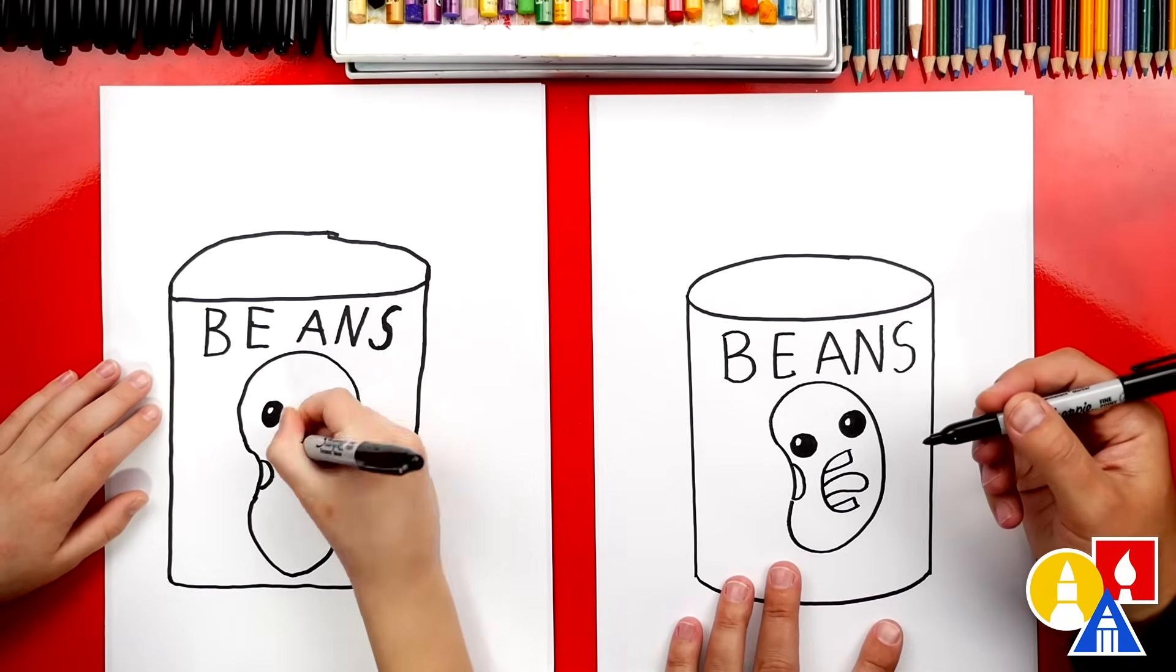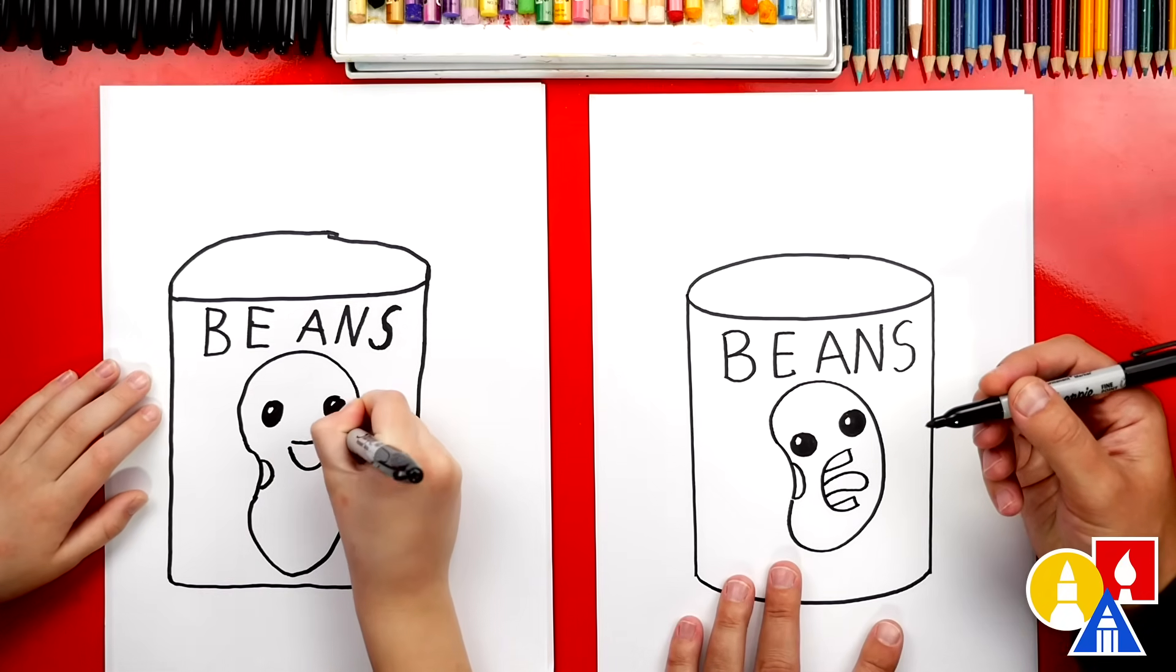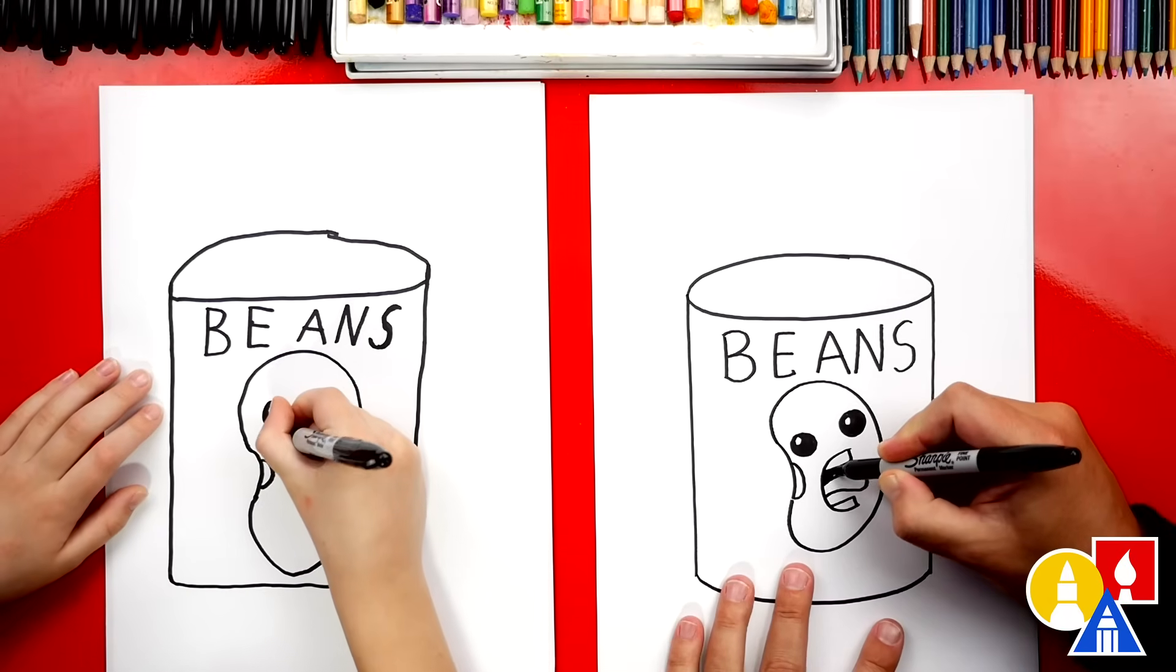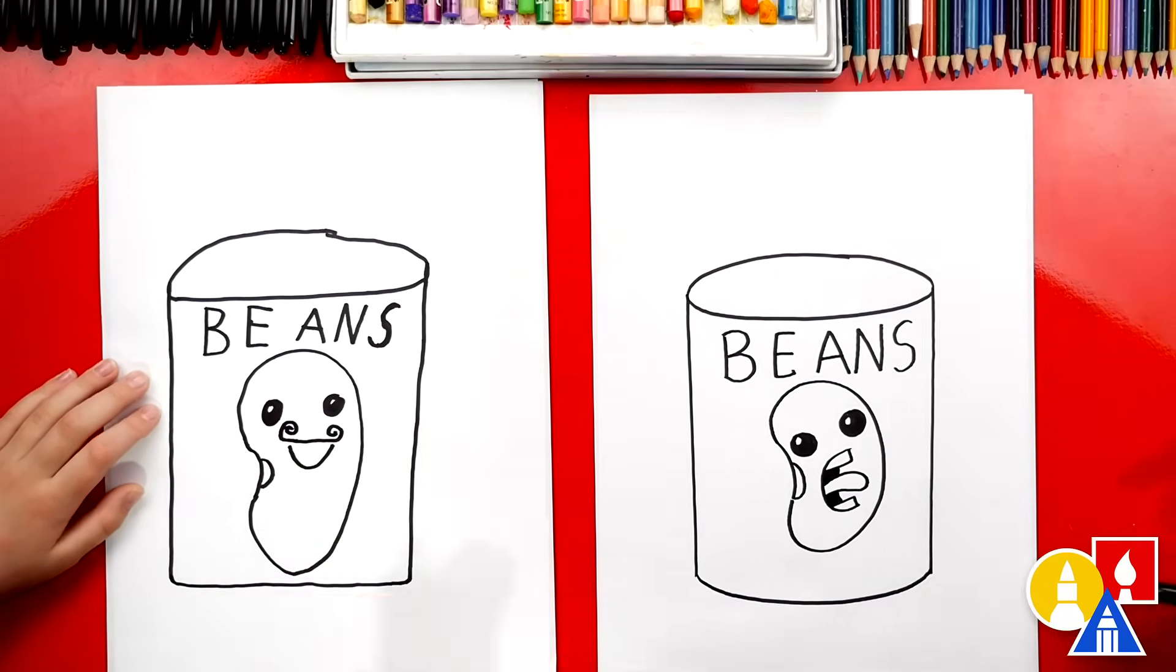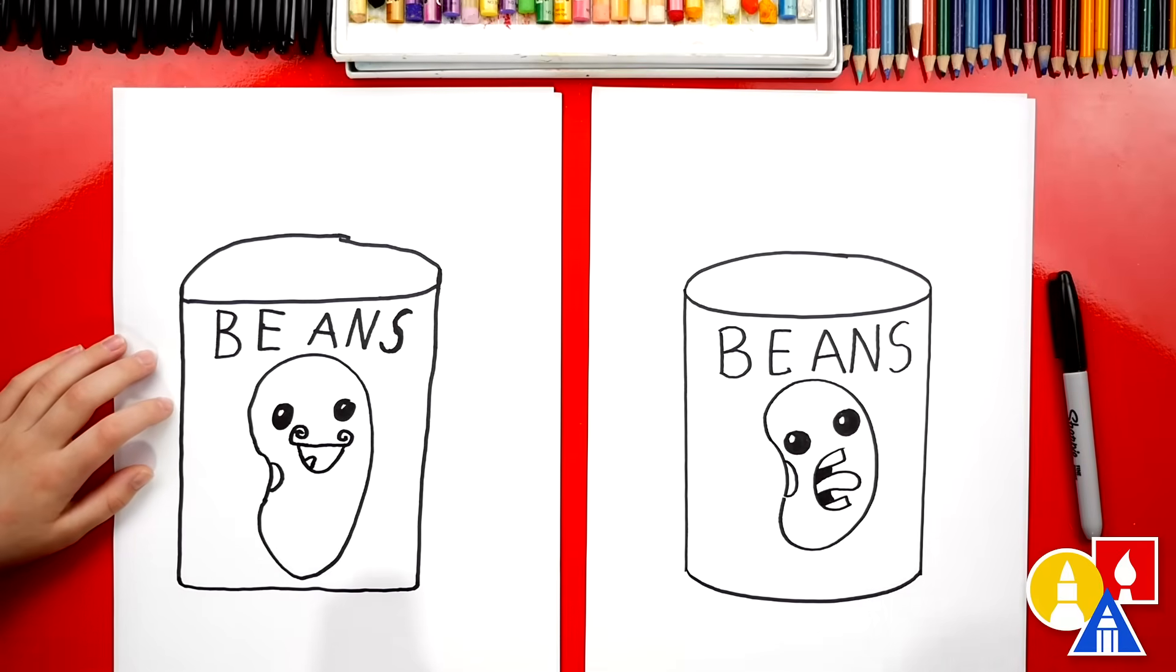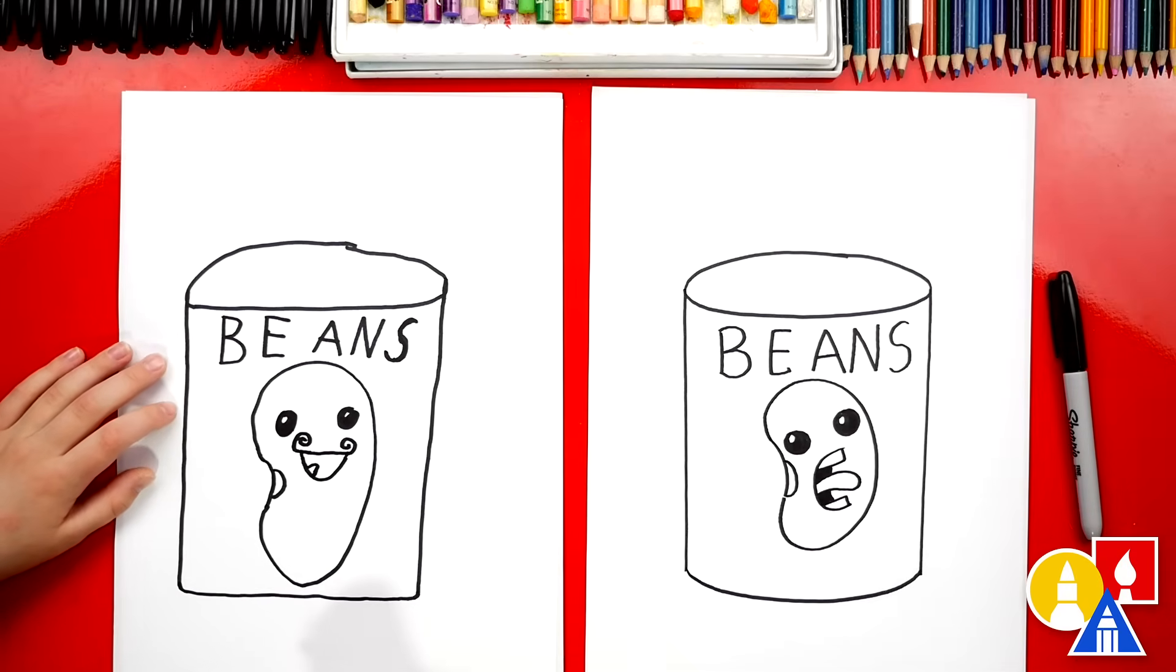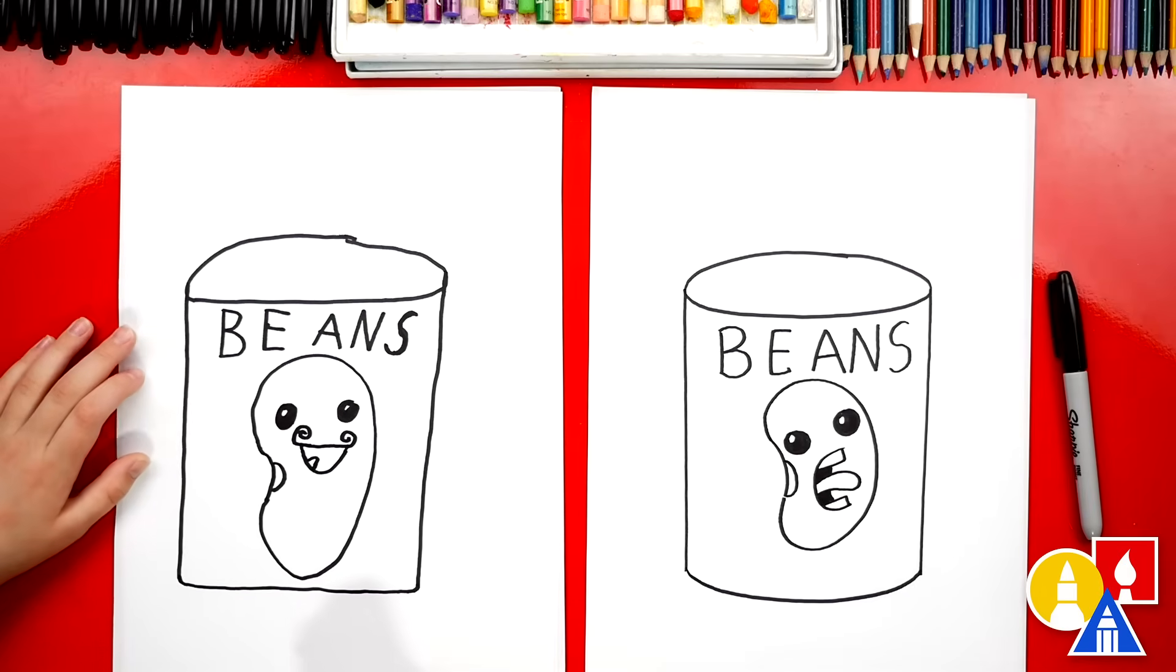Are you adding a mustache? Of course, we gotta add a mustache. Awesome, we did it. We finished drawing our can of beans. Except we still need to do one more thing. Color it. Yeah, we need to color it. This part we're gonna fast forward, but at the end you can pause the video to match the same coloring. You ready to fast forward?